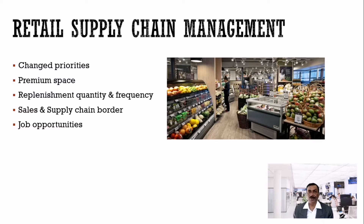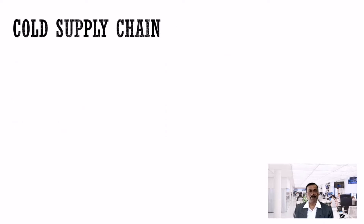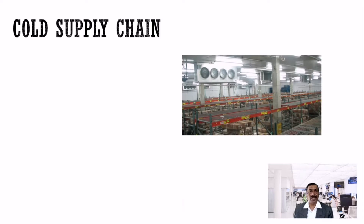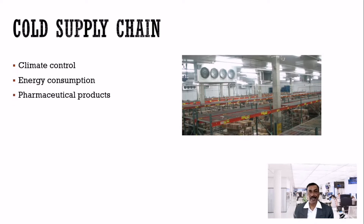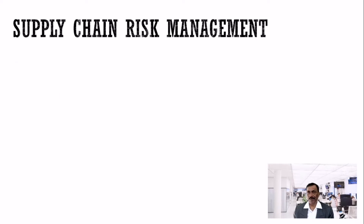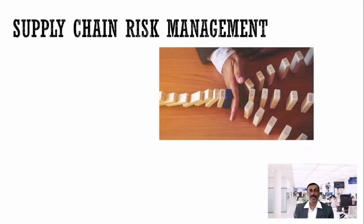Job opportunities are growing, and even in India many organizations are moving towards retail, so specializing in retail supply chain is one more area to consider. There is also cold supply chain, which requires additional special training. Not all products can be kept in an open environment — especially perishable goods or pharmaceutical goods — and you need climatic control. This requires special knowledge on energy consumption, and it applies not only in storage but also in transportation.